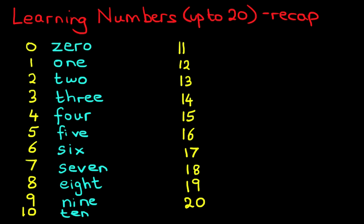So those are all the numbers in words from 0 to 10. Now on the right hand side, we'll do the numbers from 11 to 20. The first one is 11. E-L-E-V-E-N, eleven.